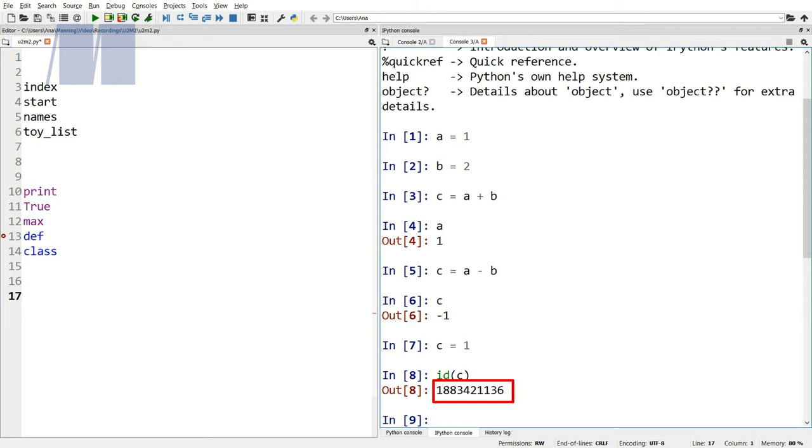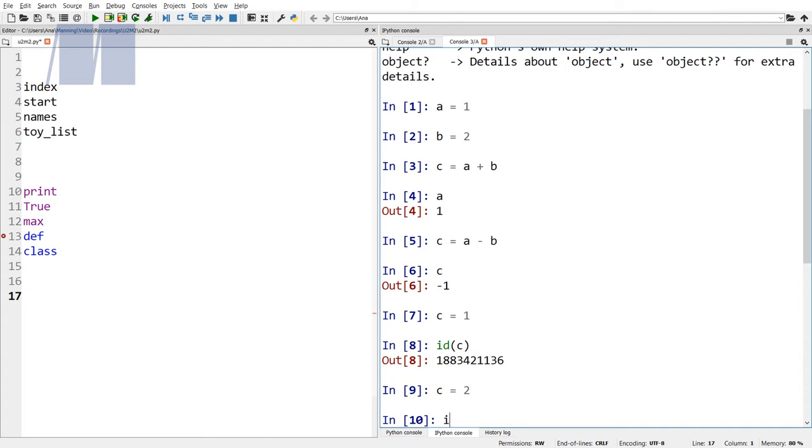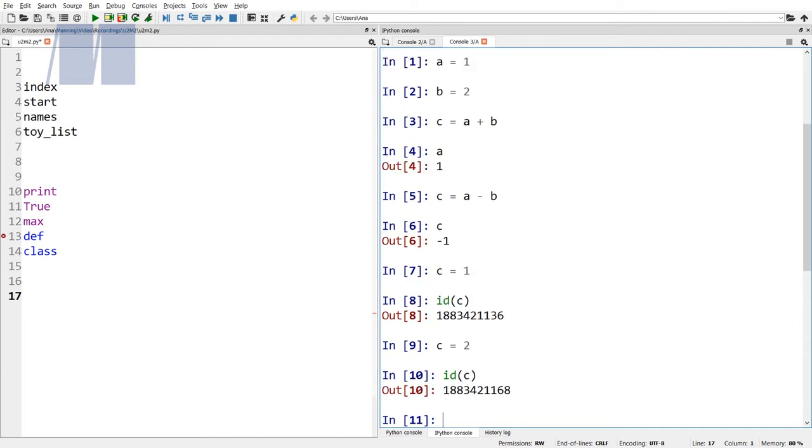Now type in c equals 2, and then id parentheses c close parentheses. After this command, I get a different number than the previous one. These are two numbers for the same variable name because the numbers 1 and 2 are different objects.